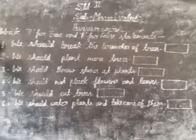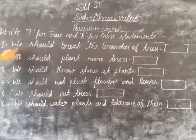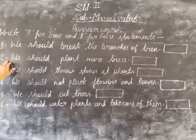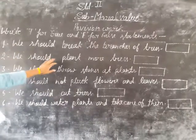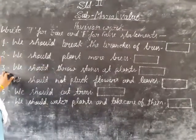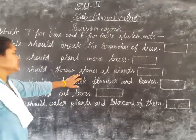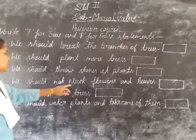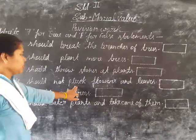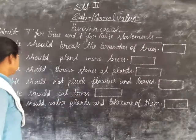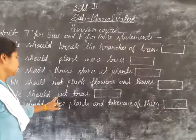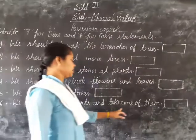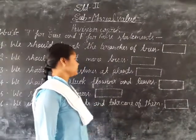Right, in front of our first statement. First, we should break the branches of trees. Second, we should plant more trees. Third, we should throw stones at plants. Fourth, we should not pluck flowers and leaves. Fifth, we should cut trees. And sixth, we should water plants and take care of them.